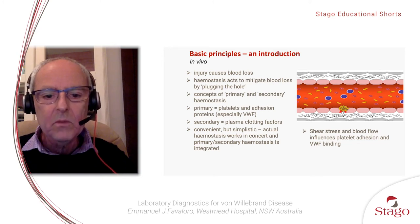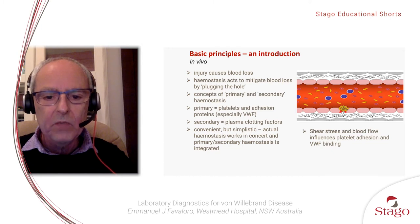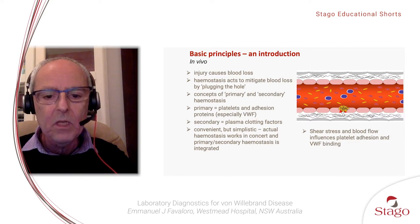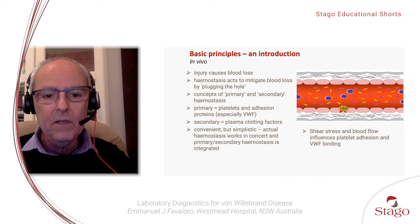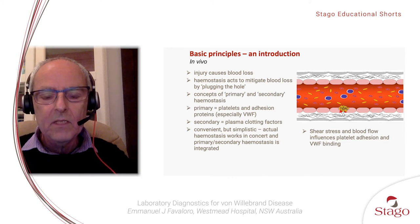Within primary haemostasis, we refer to the activity of platelets and adhesion of those platelets to the site of injury. That includes various adhesion proteins and especially von Willebrand factor. When we talk about secondary haemostasis, we're talking about clotting — the plasma clotting factors. This is a convenient process to consider haemostasis, but it's simplistic. What happens in vivo is that these processes work in concert, and primary and secondary haemostasis are integrated.